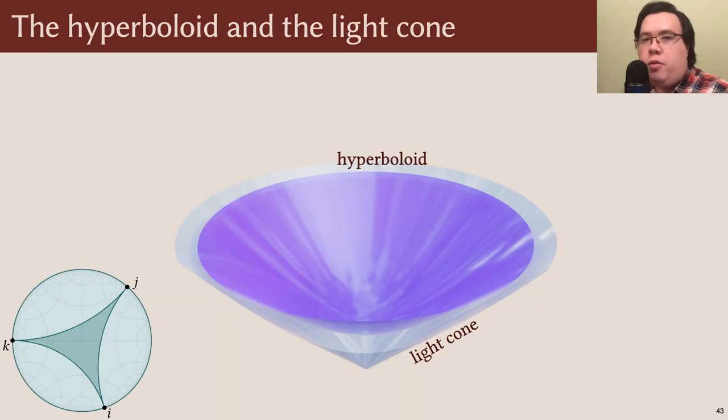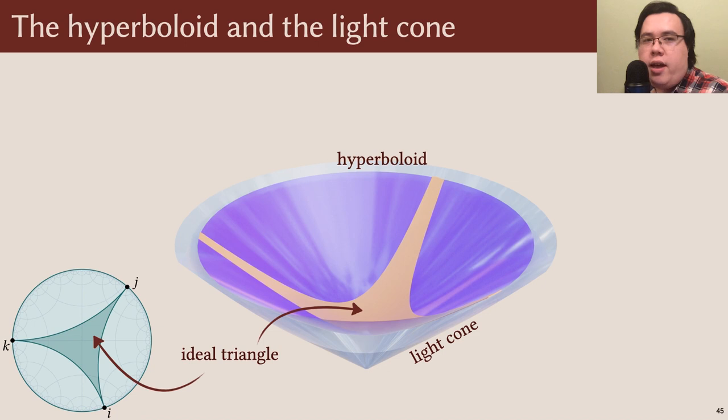Unsurprisingly, the hyperboloid model identifies the hyperbolic plane with the unit hyperboloid. This hyperboloid asymptotically approaches a cone, known as the light cone, whose rays represent ideal points of the hyperbolic plane. Ideal triangles appear again as triangles with curved edges, but this time their edges really do go off to infinity.